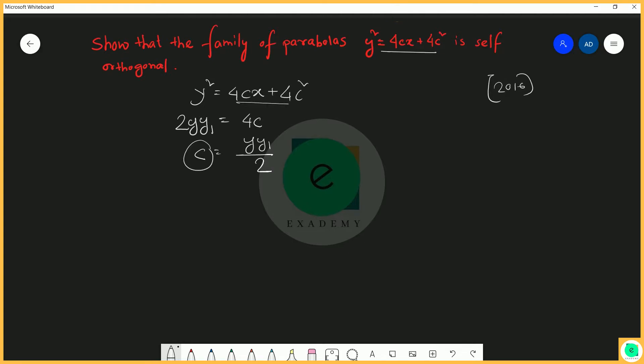Putting C into the equation, we get y² = 4 × (y·y₁/2) × x + 4 × (y·y₁/2)².